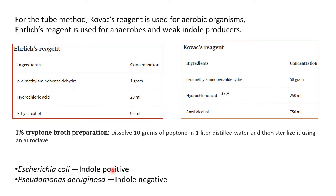Now let's look at the reagents. There are two test methods. The first is the tube method where Kovacs reagent is used for aerobic organisms, and the second is where we use Ehrlich reagent for anaerobes and weak indole producers. Ehrlich reagent contains P-dimethylaminobenzaldehyde, hydrochloric acid, and ethyl alcohol. Kovacs reagent contains the same P-dimethylaminobenzaldehyde, hydrochloric acid, and amyl alcohol.